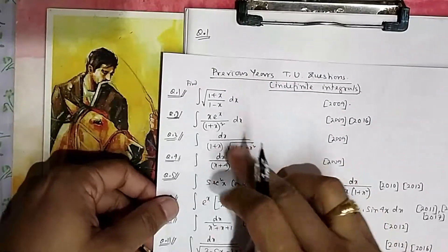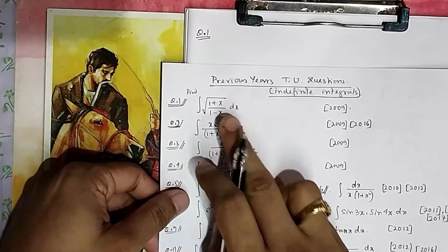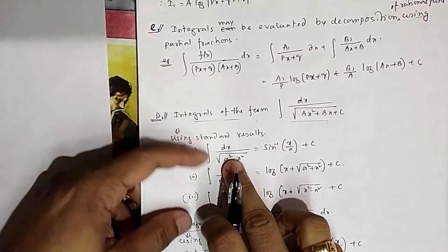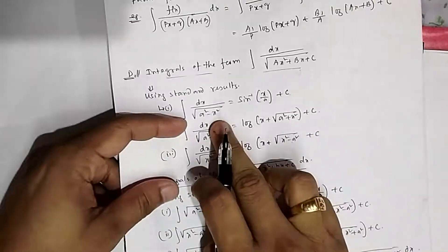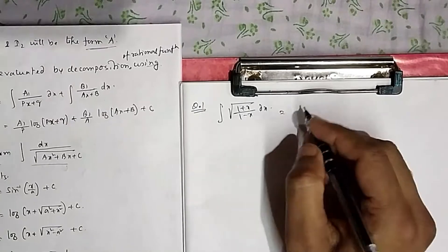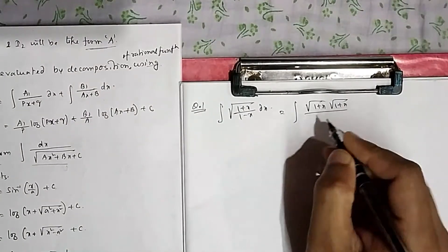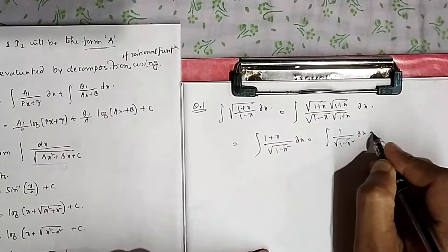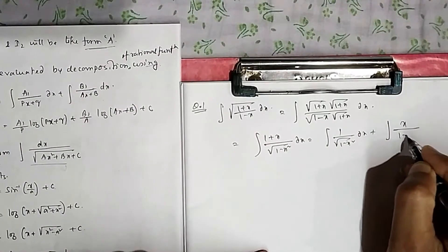In question number one, evaluate the integration — whether it says 'find' or 'evaluate,' it means the same thing. To solve this, you need to apply one of the standard formulas. Since there is a root and '1 minus x' is there, if you can bring it to the format 1 minus x², you can proceed. To do that, multiply numerator and denominator by √(1+x). Then the integral splits into: integration of 1/√(1−x²) dx, and integration of x/(1−x²) dx.